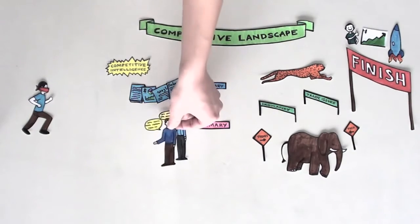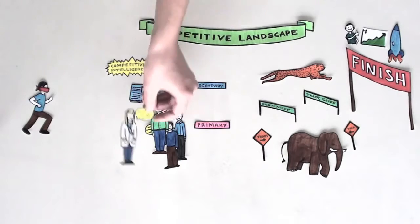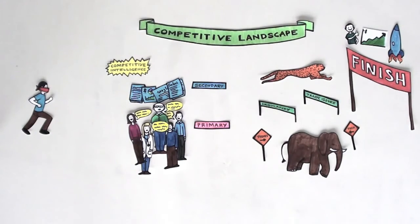Primary intelligence comes from conversations with industry experts, competitors, former employees, vendors, and customers. The benefit of primary research is that it provides the most detailed and comprehensive view of the competitive landscape.